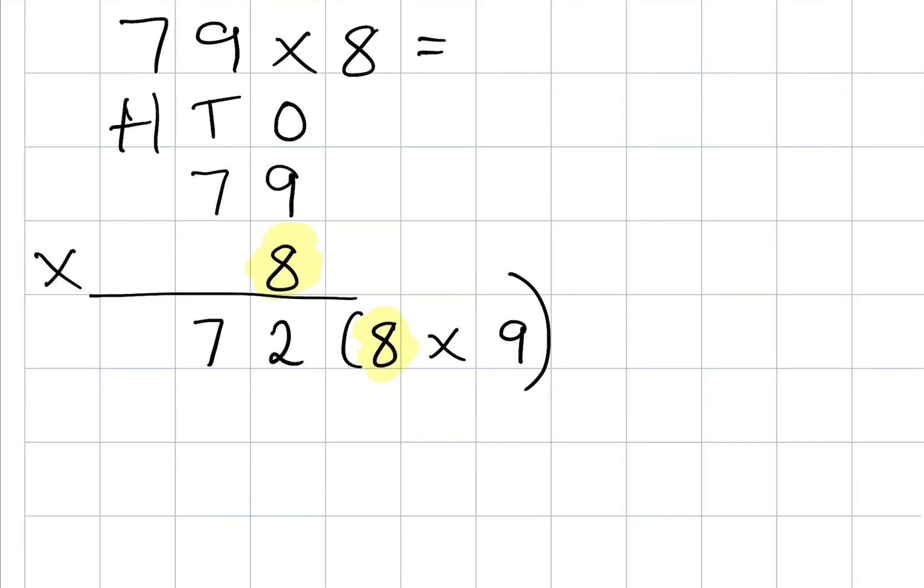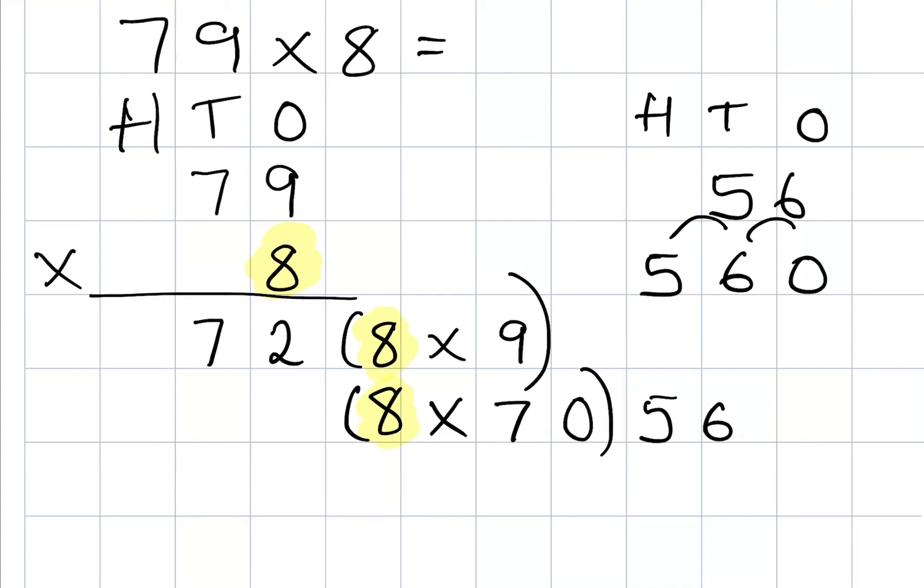Now I need to do my tens column, so again I bring down that ever important star golden number. This time it's 8 times 70. I'm going to try and do it my easy way. I'm going to do 8 times 7 instead. Now 8 times 7 is going to give me 56, but I know it's 8 times 70, so I need to make that 56 ten times bigger. I can use my hats to help me. 56, move all the digits one place to the left: 5, 6, they stick together. Put in my placeholder to stop the digits sliding back down. So 8 times 70 is 560.